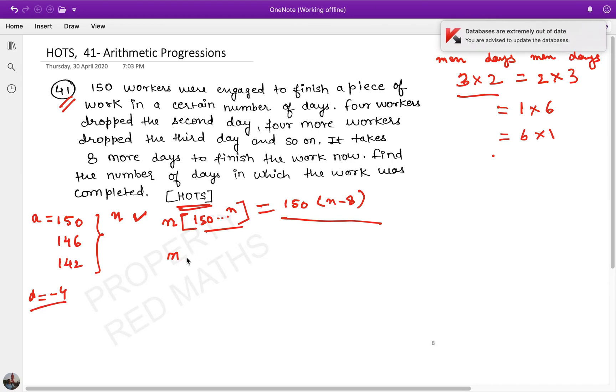What is the sum of n terms? The formula is: sum equals n by 2 multiplied by 2a plus (n minus 1) times d. So we have n/2 multiplied by 2 times 150, which is our first term, plus (n minus 1) into minus 4.